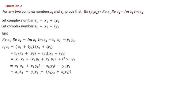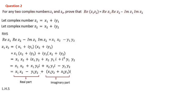From the product z1·z2, the real part is x1·x2 - y1·y2. This is exactly the same as our RHS: x1·x2 - y1·y2. Therefore LHS = RHS, and the proof is complete. Hence proved.